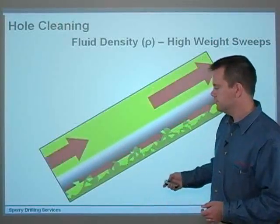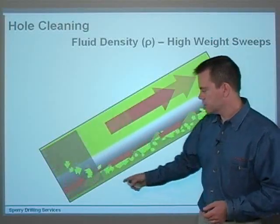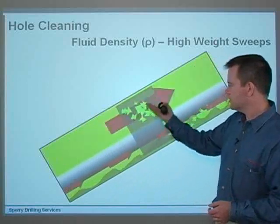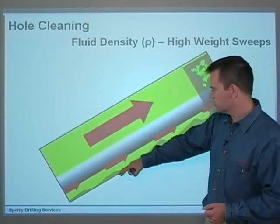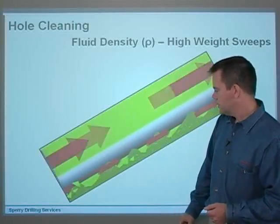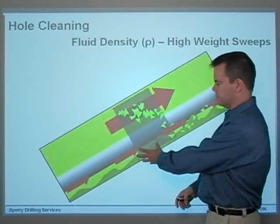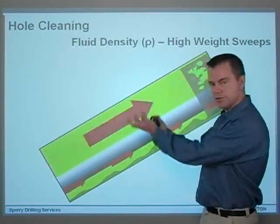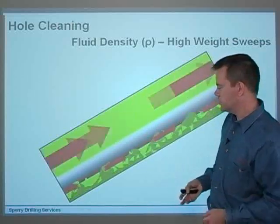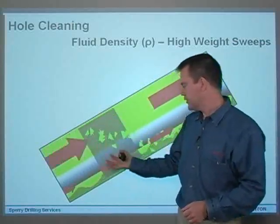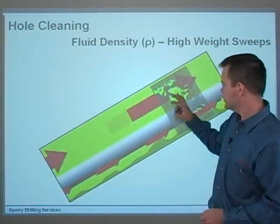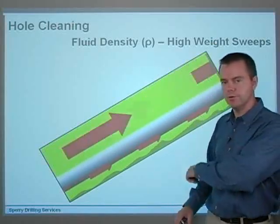Just watch as the sweep comes up. Cuttings are coming out and the bed height is reducing. There you go. As the sweep comes, it's high density, so all the cuttings are buoyed up using the buoyancy effect of the higher density fluid coming past. Cuttings are buoyed up and removed from the wellbore.